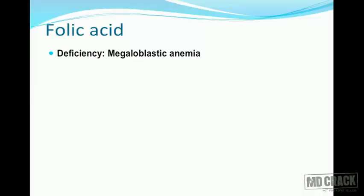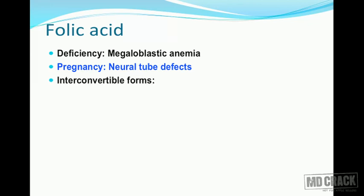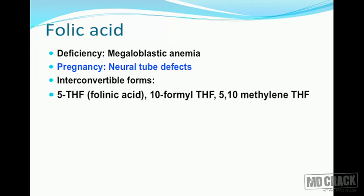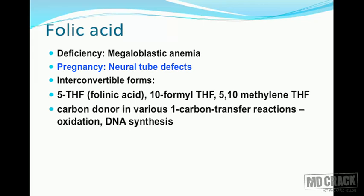Folic acid deficiency causes megaloblastic anemia, and deficiency during pregnancy leads to neural tube defects. There are various interconvertible forms of folic acid, including 5-tetrahydrofolic acid (folinic acid), 10-formyl THF, and 5,10-methylene THF. Folic acid works as a carbon donor in various one-carbon atom transfer reactions.